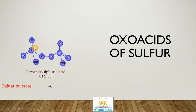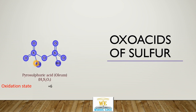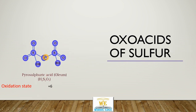Peroxodisulfuric acid: a hydrogen atom is removed and 2 oxygens exist as a peroxo group, giving an oxidation state of minus 1 for those oxygens, minus 2 for others, resulting in plus 6 again for sulphur. In peroxysulphuric acid, two H2SO4 units combine using a shared oxygen. Again, the oxidation state is plus 6. It is also known as Oleum.